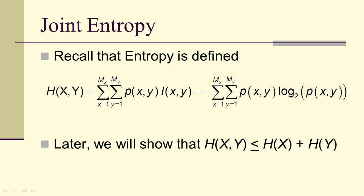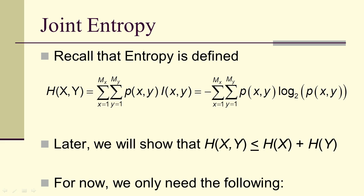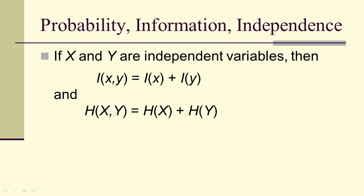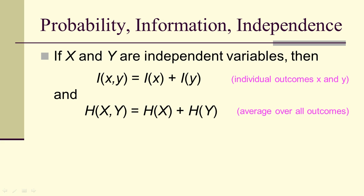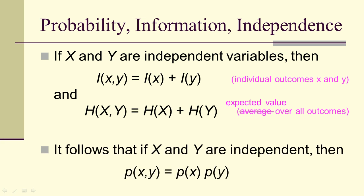Later, we'll show that joint entropy is less than or equal to the sum of the entropies. For independent variables, the joint self-information is the sum of the individual informations, and the joint entropy is the sum of the entropies. Information is for individual outcomes, and joint entropy is the average over the outcomes — technically a limit of averages, that is, expected value. If x and y are independent, then their joint probability distribution is the product of their marginal probabilities.